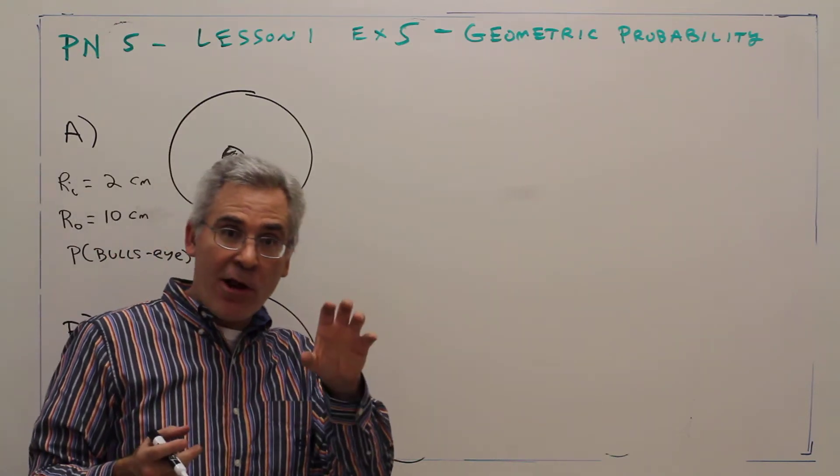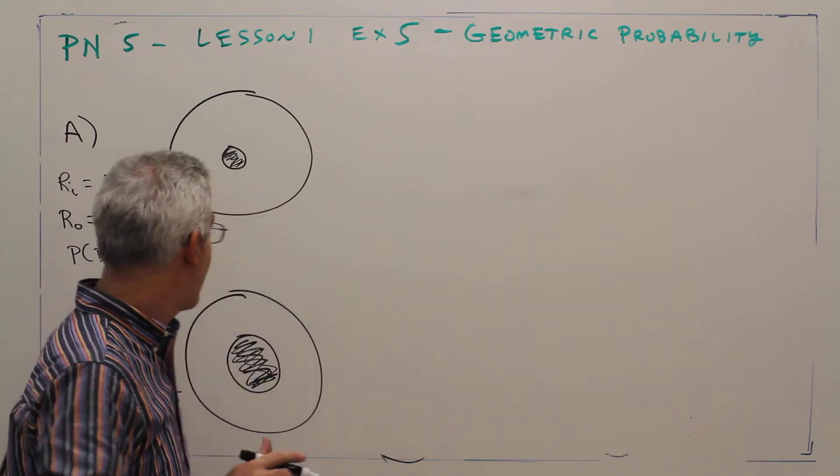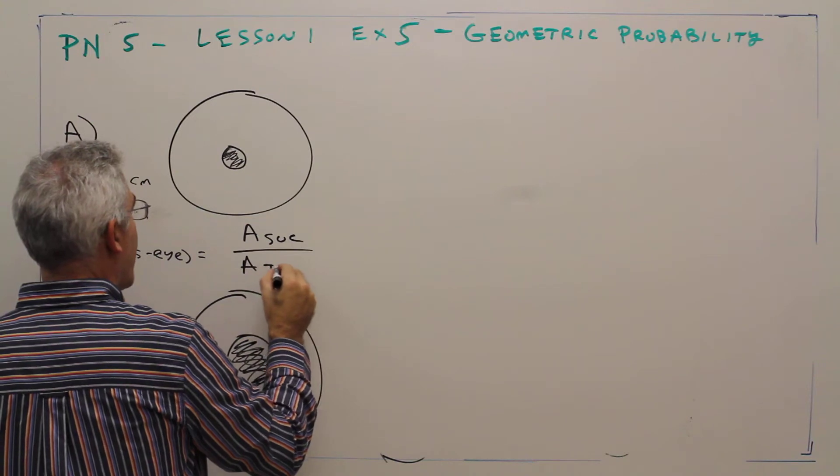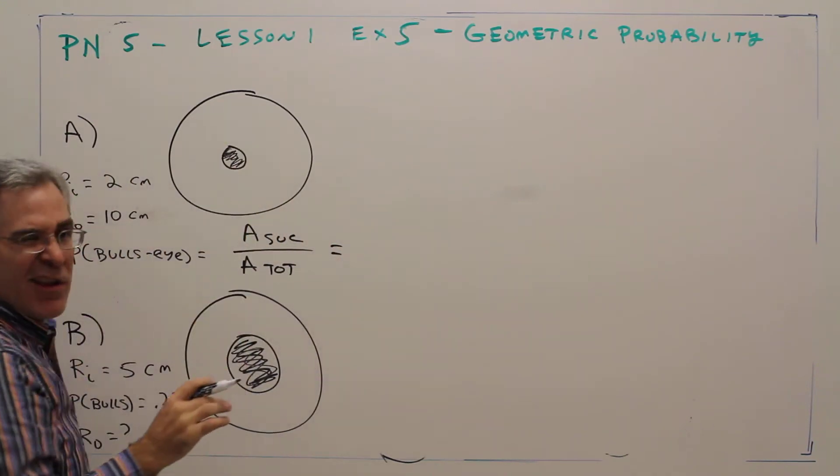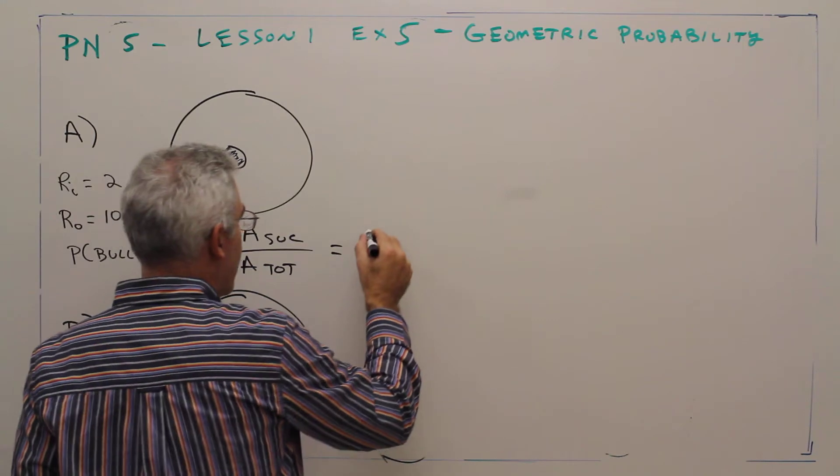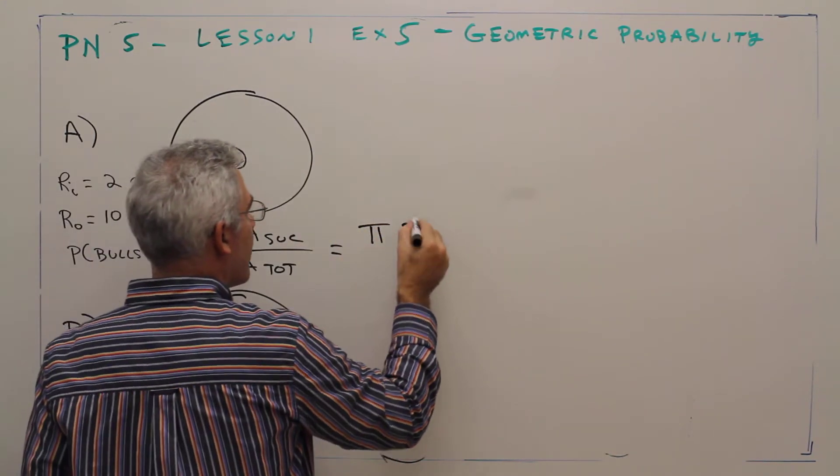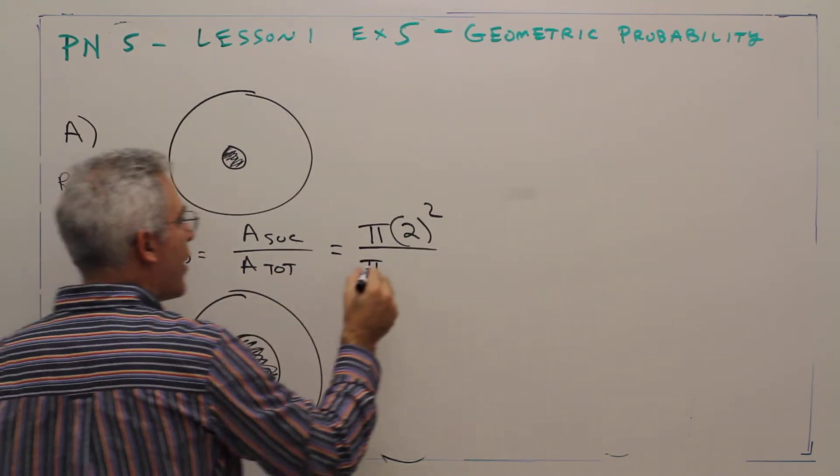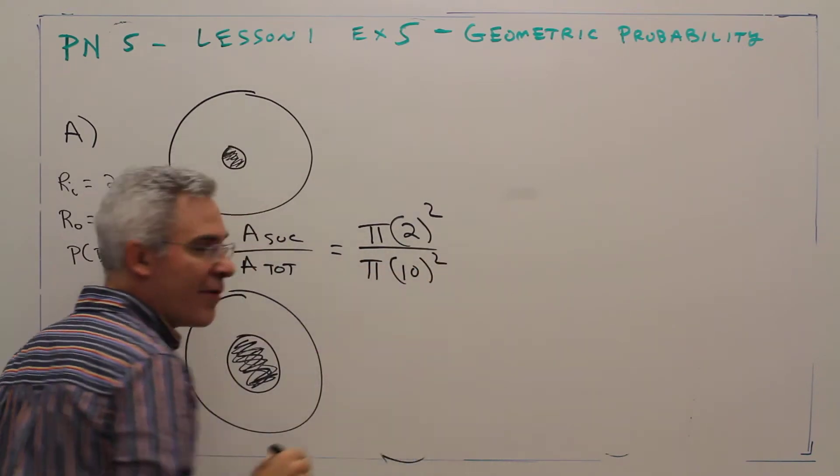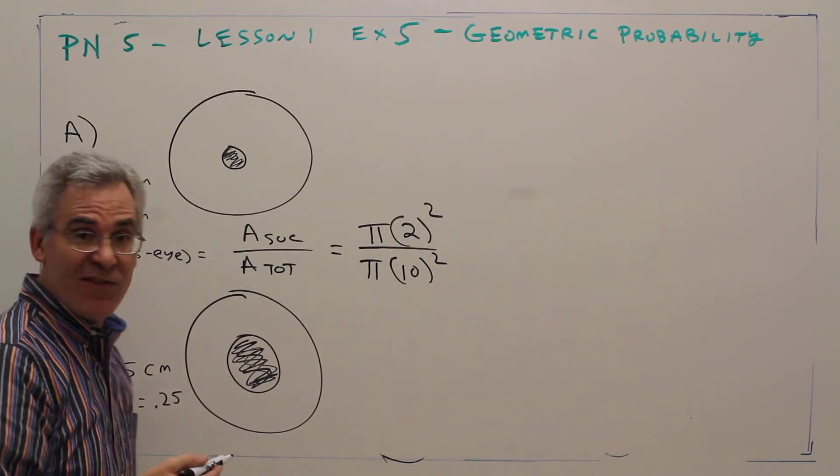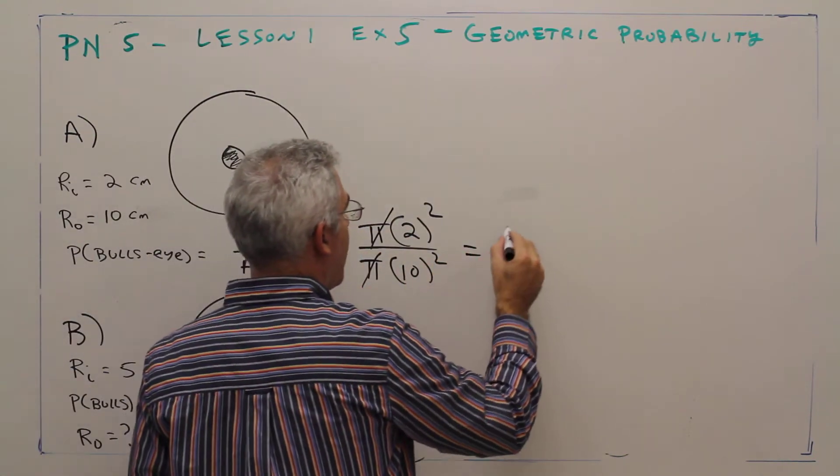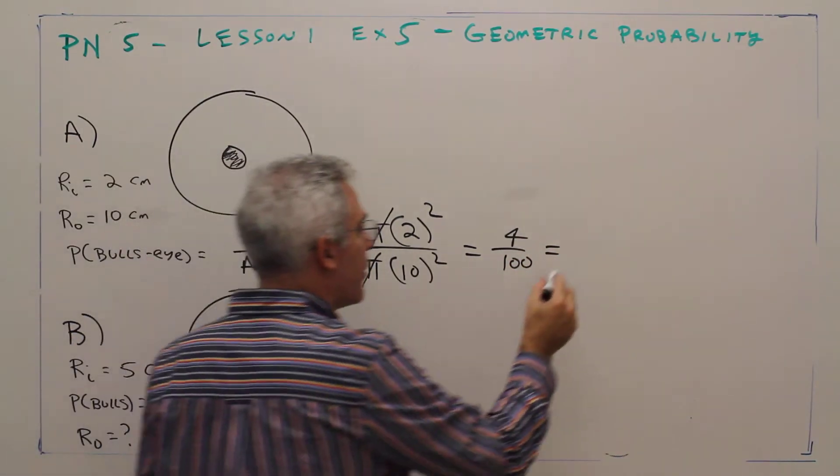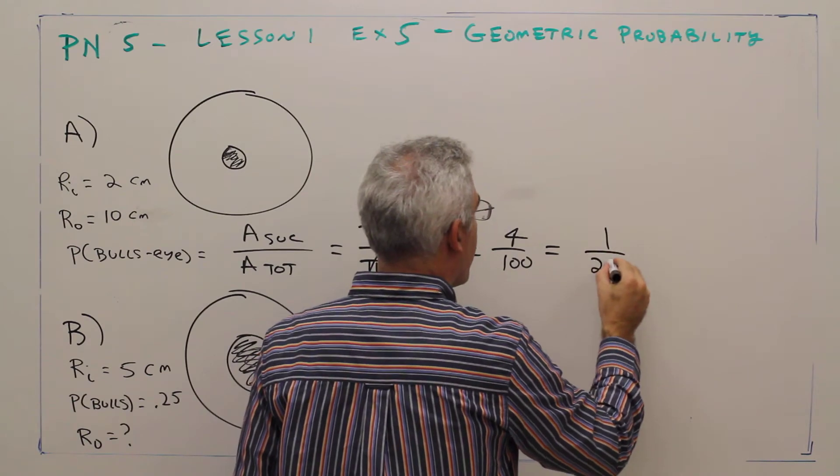Now it's just area of success over area total. The successful area is a circle pi r squared: pi times two squared. The total is pi r squared: pi times ten squared. Conveniently the pi's will cancel out. That'll be four over one hundred, and we'll reduce that down to one over twenty-five.